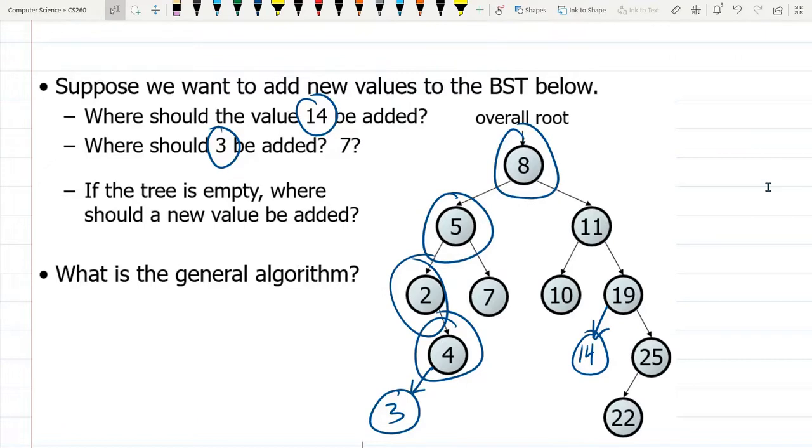Yep, so I think that covers a lot of the add cases. You basically keep looking at whatever your current node is, and you either go left or right, depending on if the value you want to add is greater than or less than the current node. And when you find that there is no left or there is no right, meaning the left or right is null, then you create a new node with that value and put that on the left or the right of the current node.